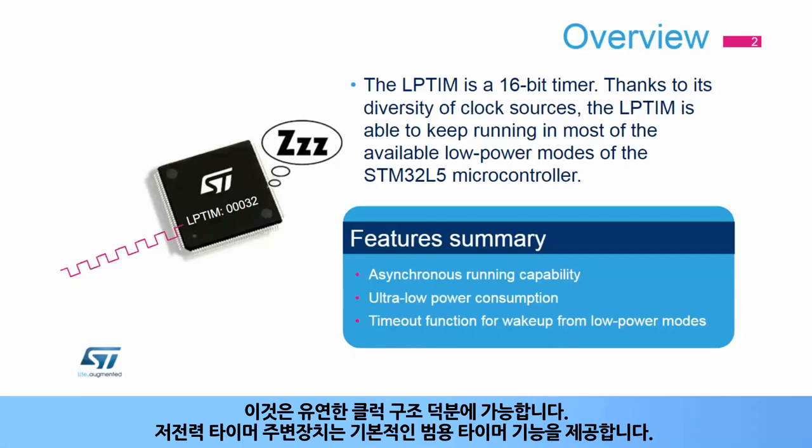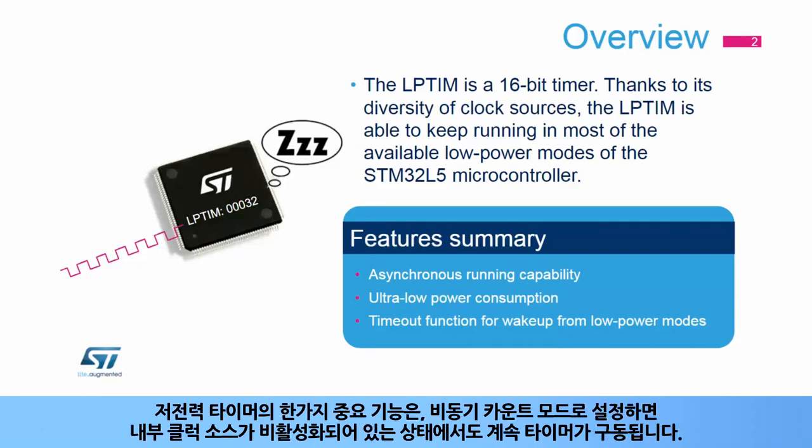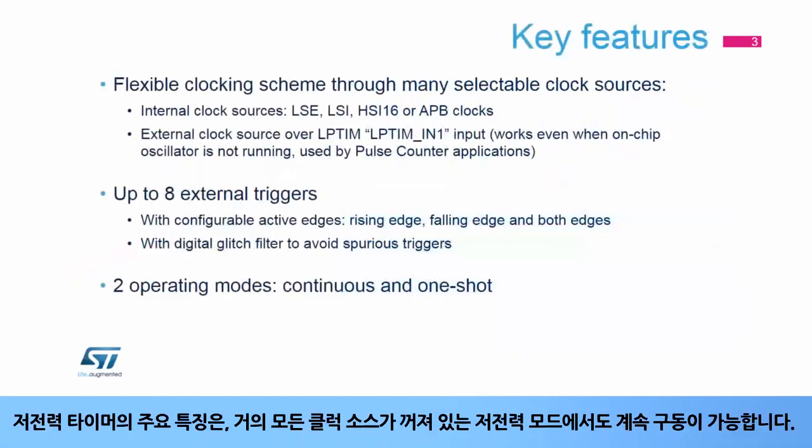The low power timer peripheral provides basic general-purpose timer functions. One major function is its capability to keep running even when no internal clock source is active when configured in asynchronous counting mode. The low power timer's main feature is its ability to keep running even in low power mode when almost all clock sources are turned off.